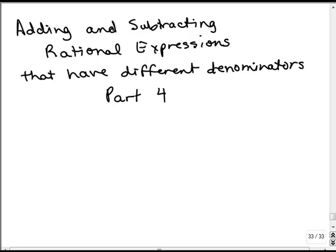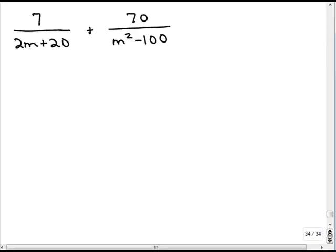This is part 4 of adding and subtracting rational expressions that have different denominators. We'll just be doing more examples. Here's an example: 7 over 2m plus 20, plus 70 over m squared minus 100.